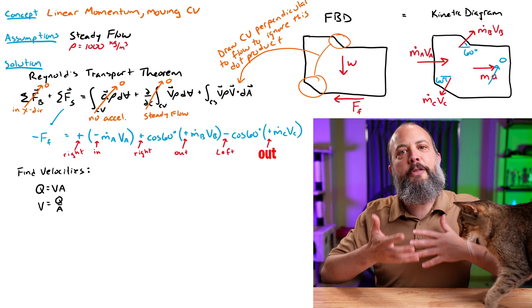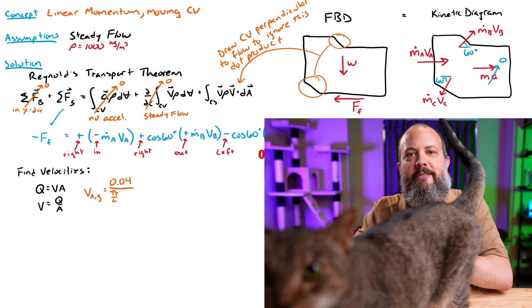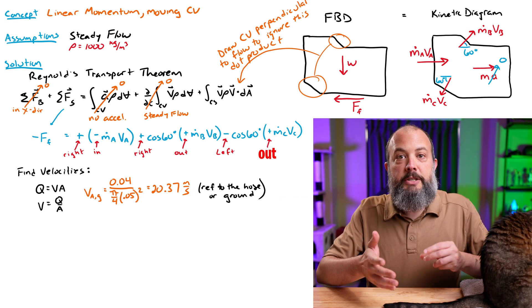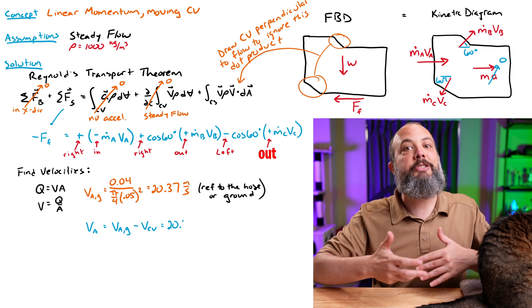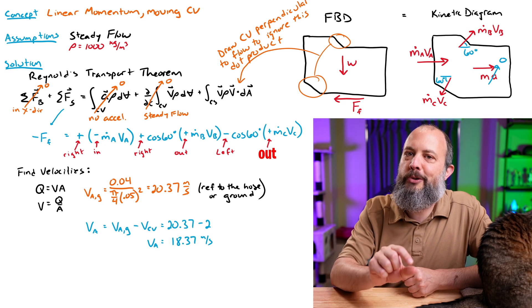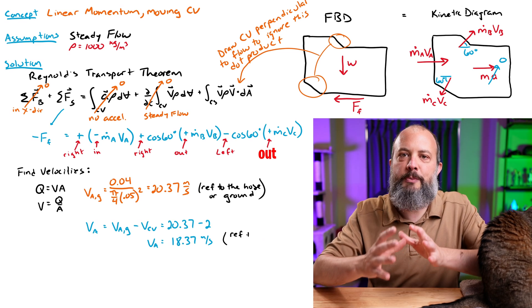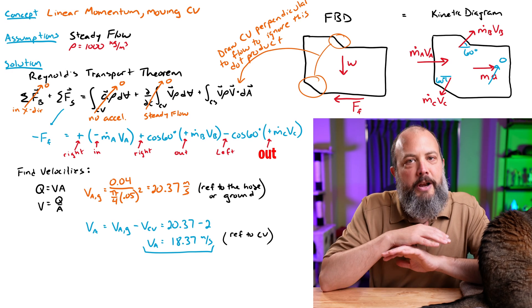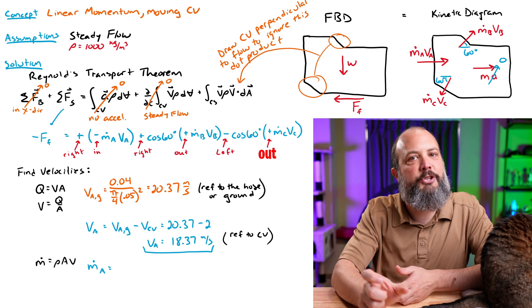So first I can find the velocity leaving the hose. So volumetric flow rate is velocity times area. I can get 20.37 as the velocity of the water as it's leaving the hose. But if the control volume is moving away from the hose, then the velocity of the water as it crosses into the control volume will be a little bit slower. 20.37 minus two means velocity at A is only actually 18.37. And that's the velocity in reference to the control volume itself. That's the speed at which water is entering the control volume. Probably the number one mistake students would make for this problem, right, is not accounting for that difference between the two velocities.